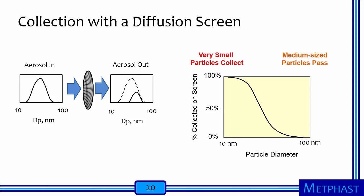Diffusion can be used to remove small particles by passing a particle-laden airstream through a screen. Brownian motion causes the smallest particles, say with a diameter of 10 nanometers, to jitter more than medium-sized particles, say a 100 nanometer sized particle. The smallest particles therefore have a high probability of hitting and collecting on the screen, having a high collection efficiency. In contrast, the medium-sized particles tend to follow the airflow and pass through the screen with low collection efficiency.